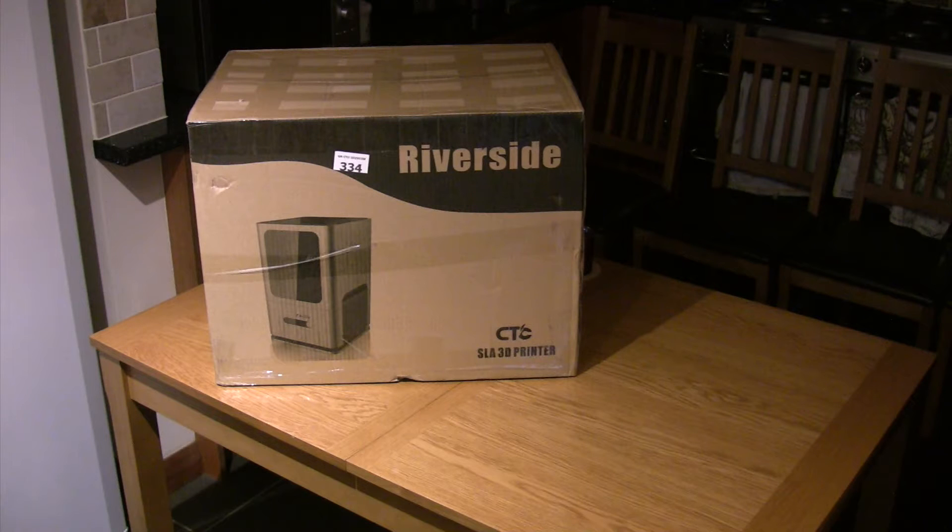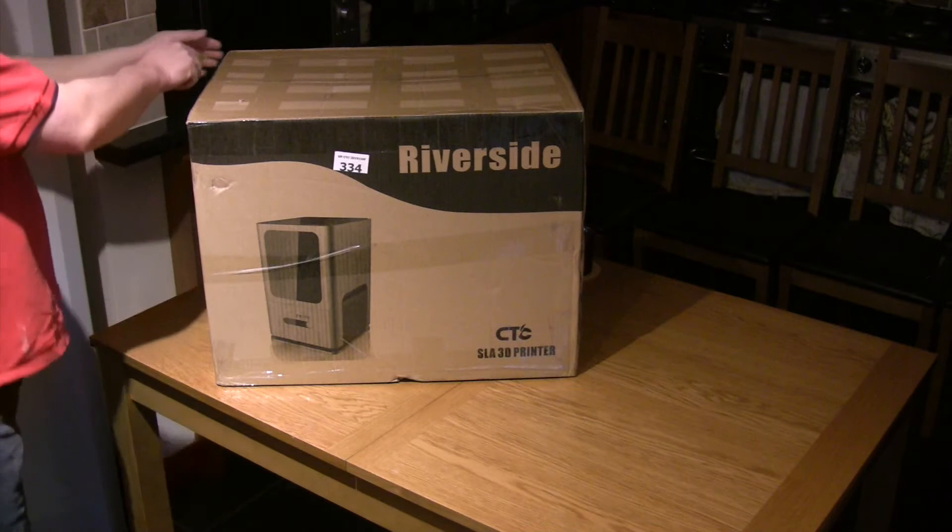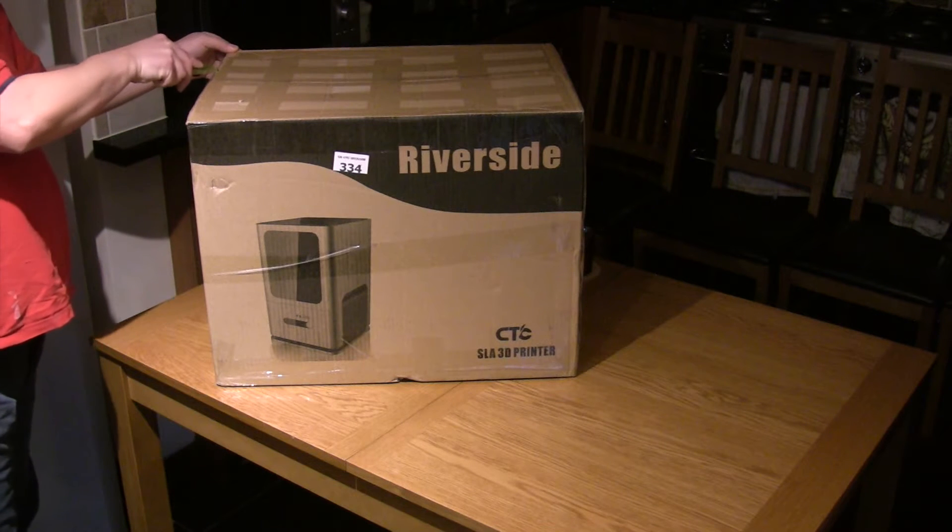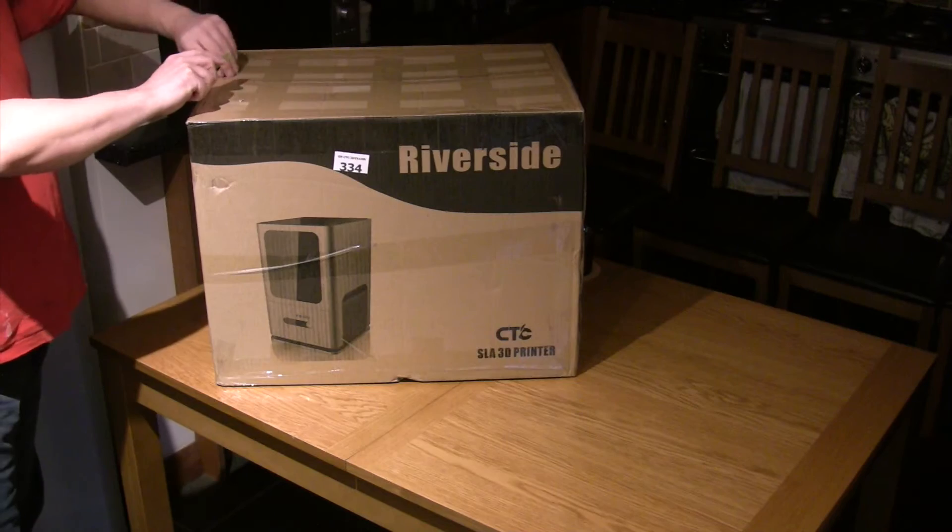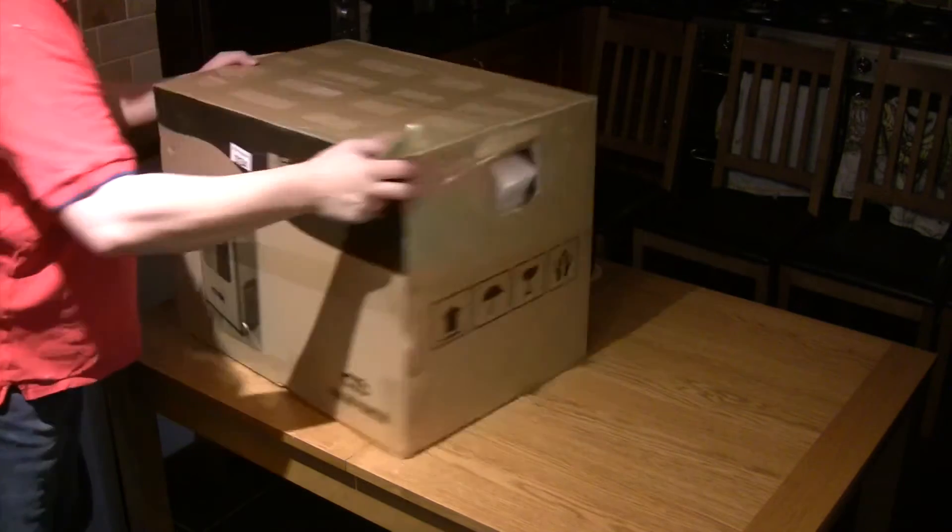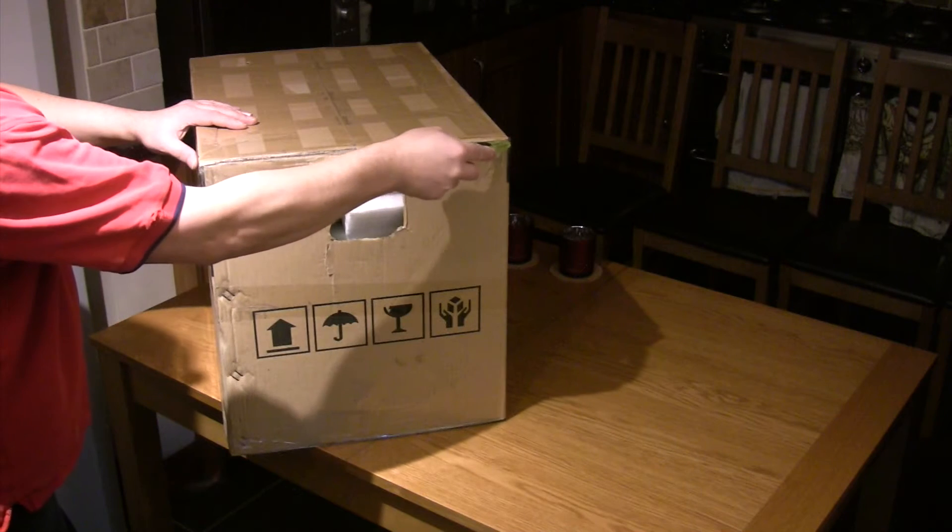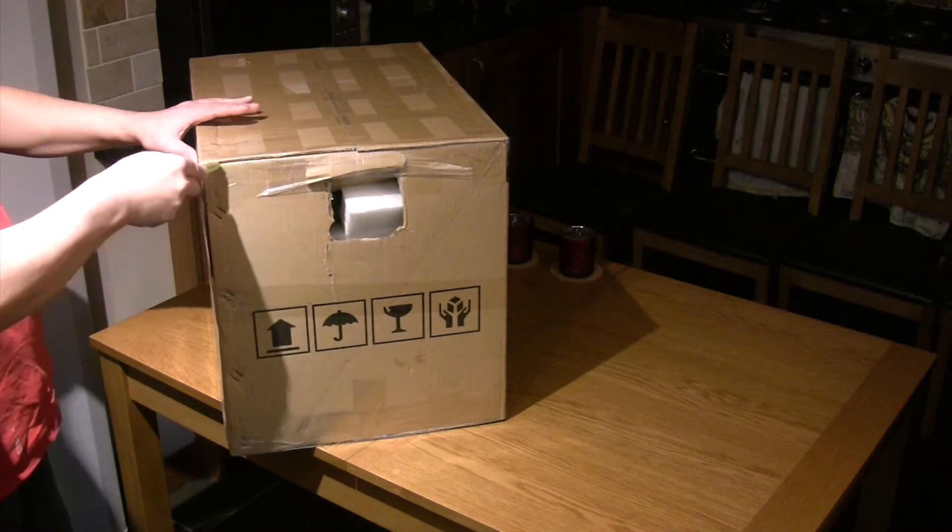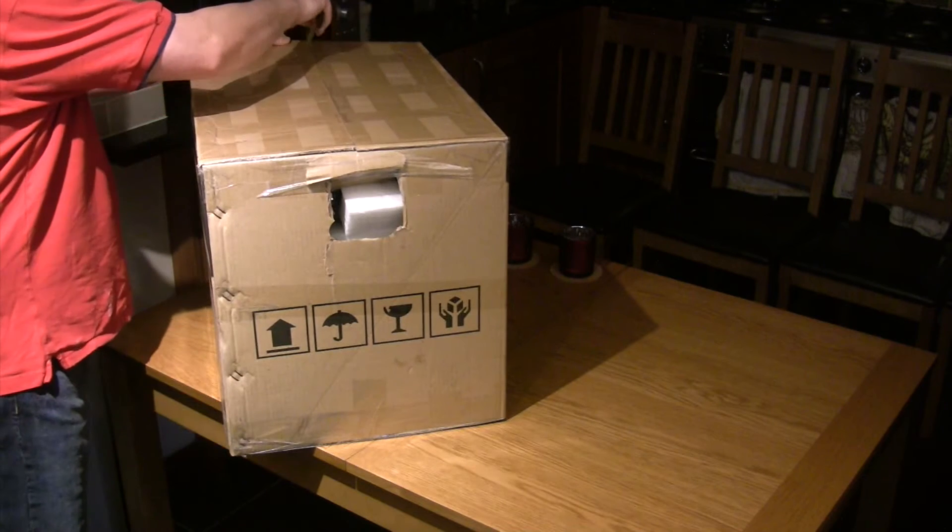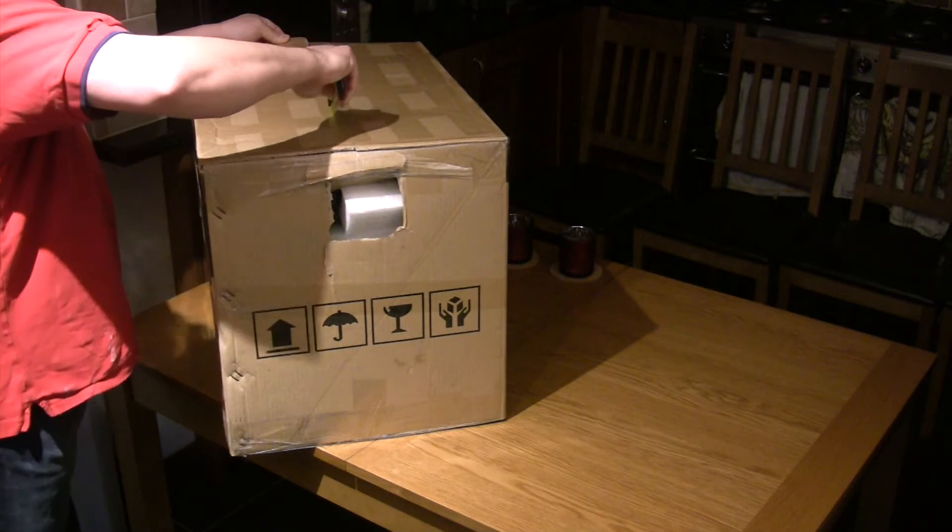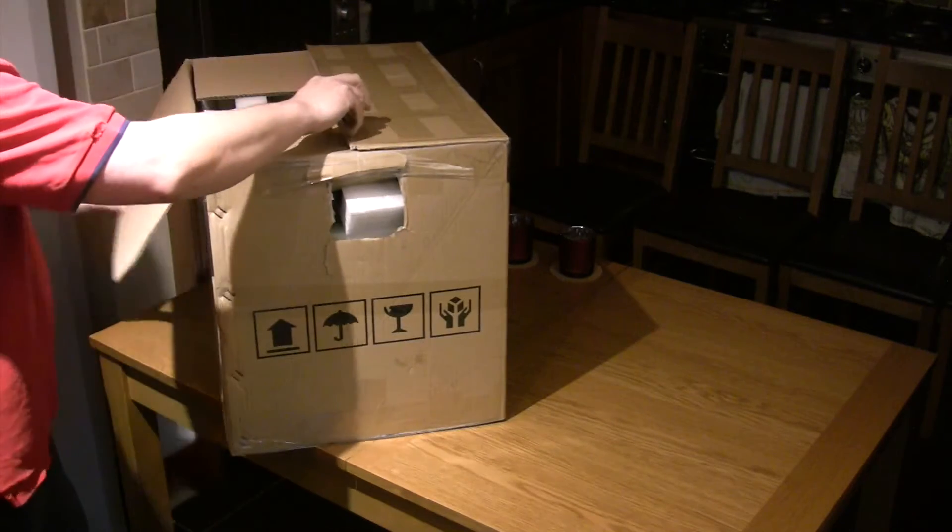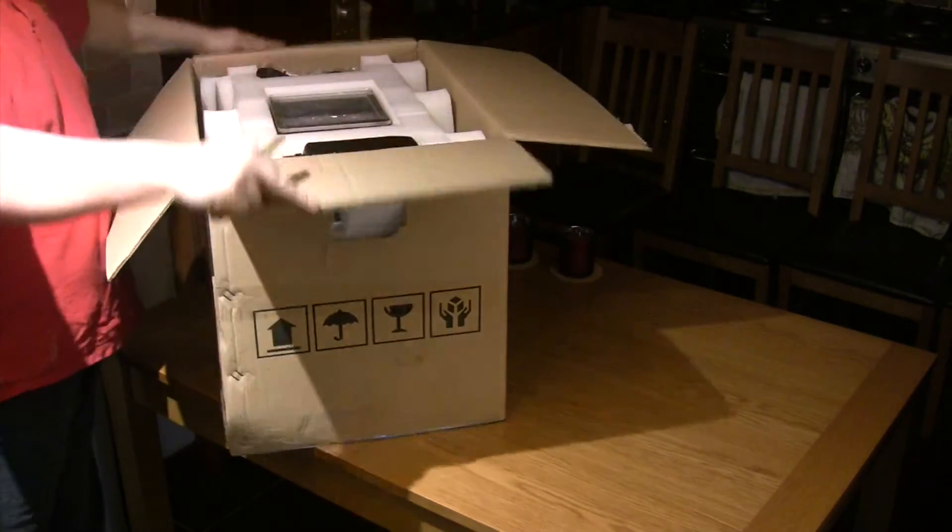I'm going to show you an unboxing, first print, and my personal thoughts on the CTC Riverside 3D printer. This is CTC's second attempt at producing an SLA printer. The first was a blatant rip-off of the Formlabs Form 1, even running their firmware and the slicer software pre-form. I'm guessing they were threatened with legal action because they've since released the newer Riverside. This has a new redesigned case, its own firmware, and ships with a custom version of Cura.